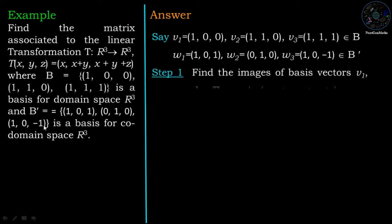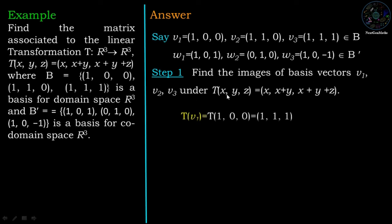Now, the first step of the algorithm: find the images of basis vectors V1, V2, V3 under T. So Tv1 = T(1,0,0): with x=1, y=0, z=0, the first coordinate is 1, the second coordinate is 1+0 = 1, and the third coordinate is 1+0+0 = 1. So Tv1 = (1,1,1).